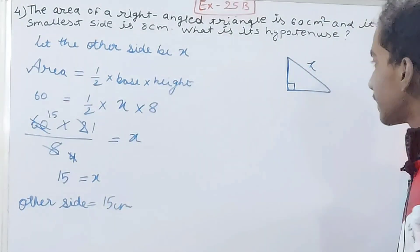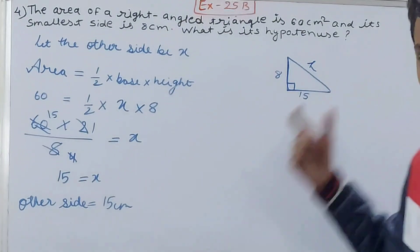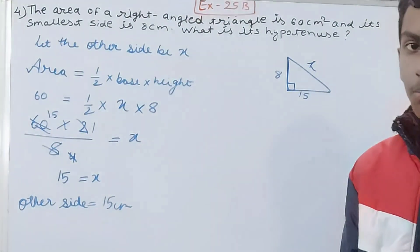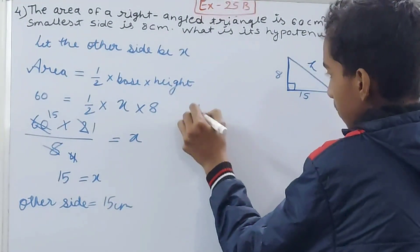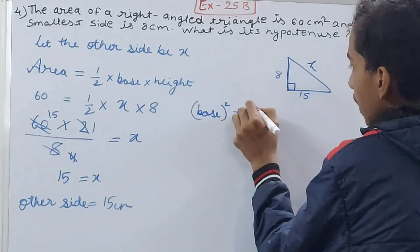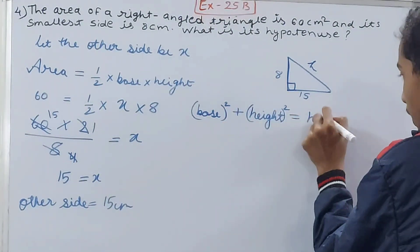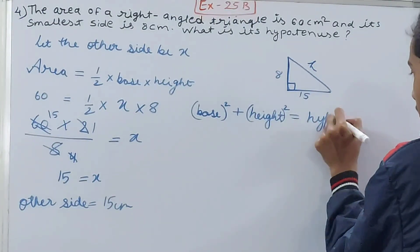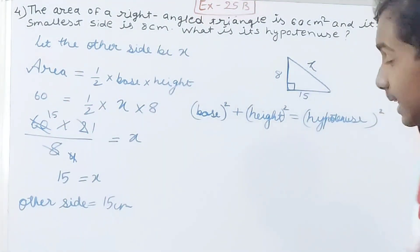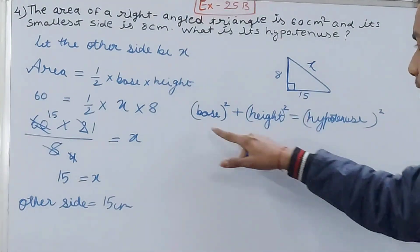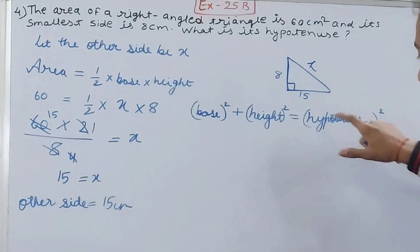But what is asked is the length of the hypotenuse, not X. Now we know one side is 8 and the other is 15. We can calculate the hypotenuse using the Pythagoras theorem, which states that base² + height² = hypotenuse². We know these two values, so we can calculate the third one.